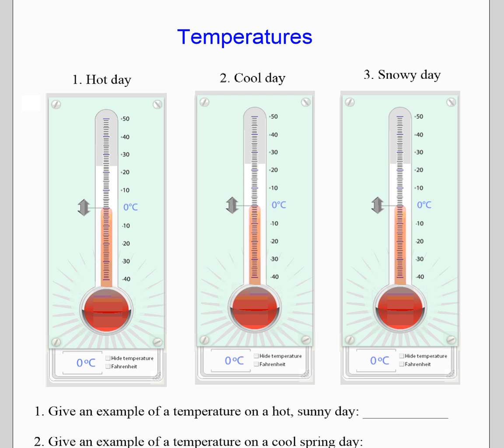For example, I want you to think about a temperature outside on a really hot day. A temperature outside on a really hot day might be about 30 degrees Celsius or 32 degrees Celsius. That would be really hot outside.